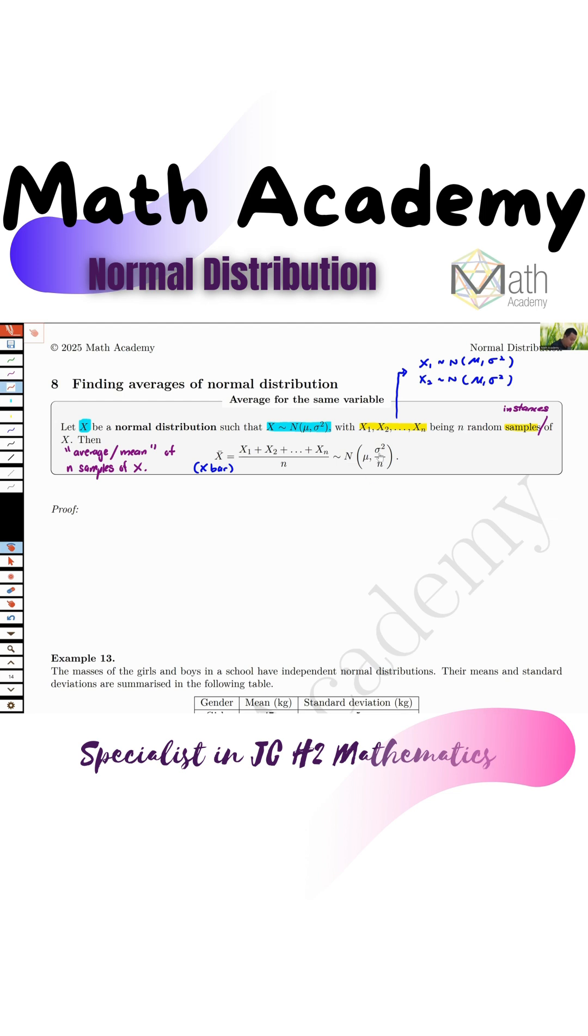If you observe the distribution of x bar versus x, you will notice that the mean stays the same. Same mean. You don't divide by n or times n. Nothing. It's exactly the same.